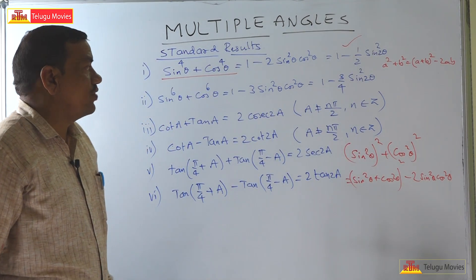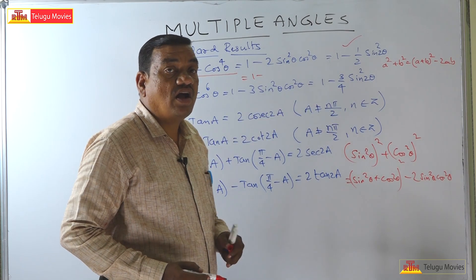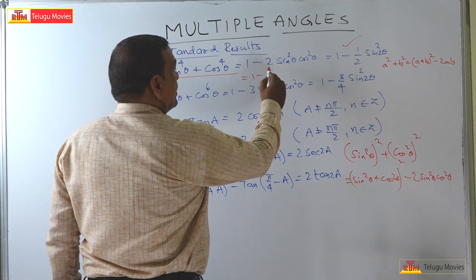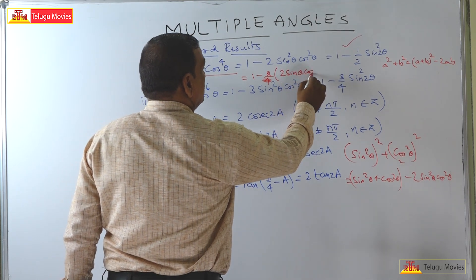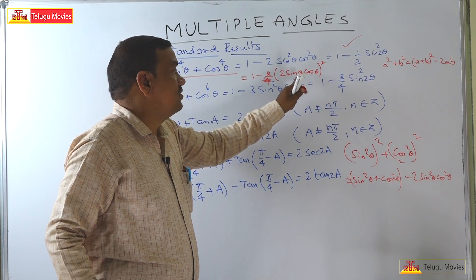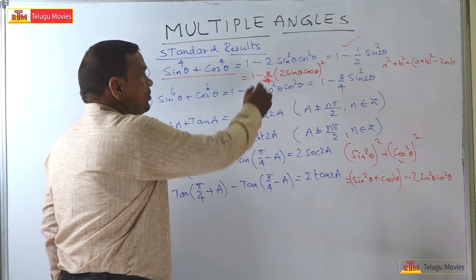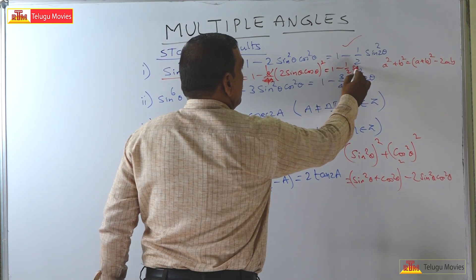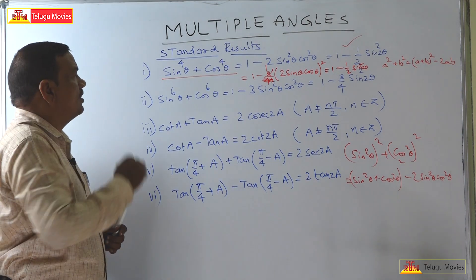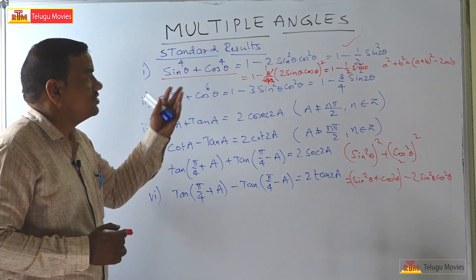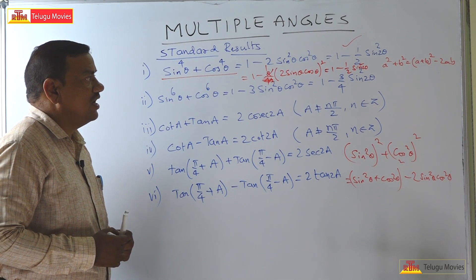To get the final form, we know that 2sinθ cosθ = sin2θ, so 2sin²θ cos²θ = (2sinθ cosθ)²/2 = sin²2θ/2. Therefore sin⁴θ + cos⁴θ = 1 − (1/2)sin²2θ. That completes the proof of the first result: sin⁴θ + cos⁴θ = 1 − 2sin²θ cos²θ = 1 − (1/2)sin²2θ.